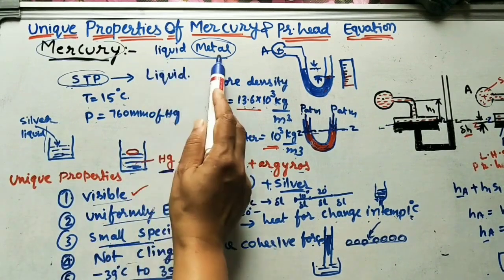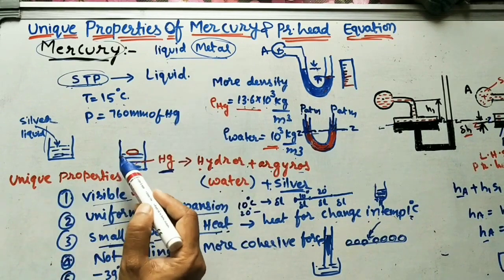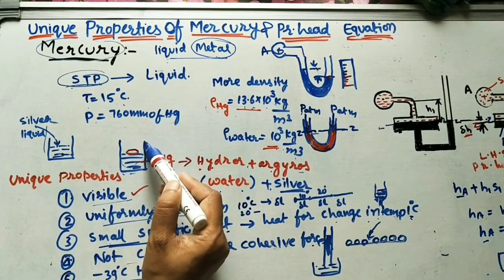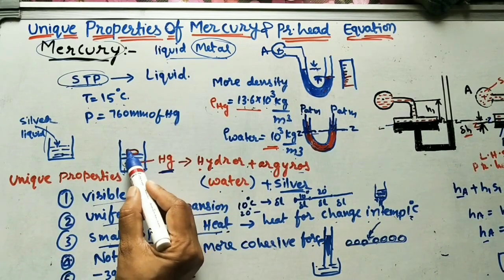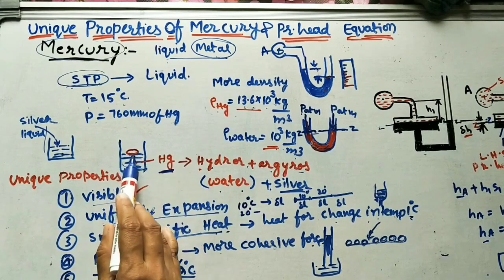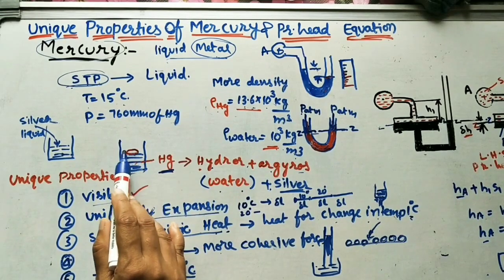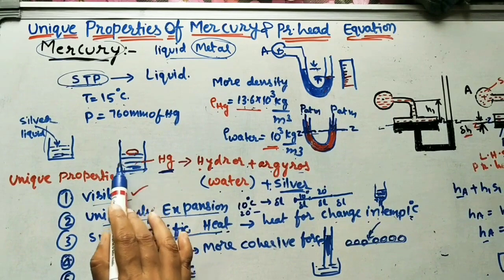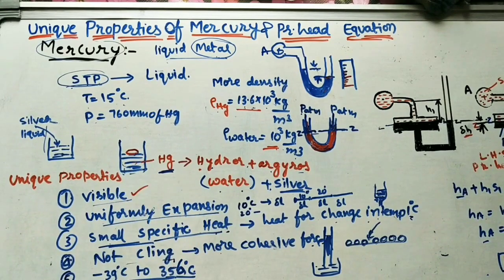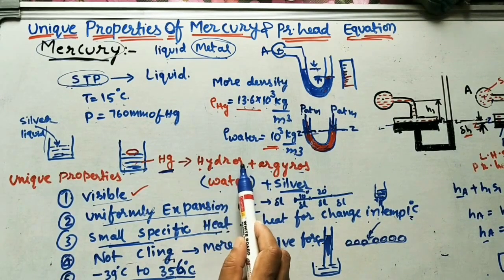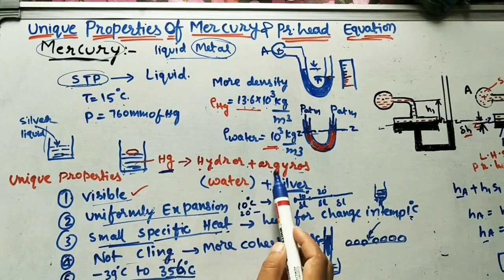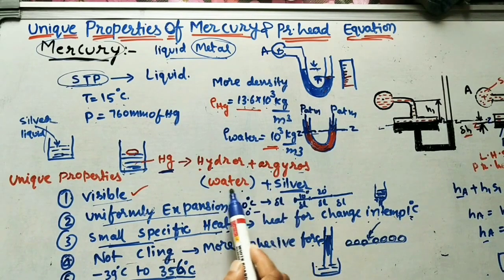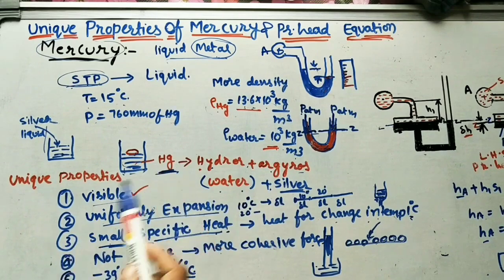Mercury is silver in color. Because it is a high-density liquid, if you place a coin in it, the coin will float. Less dense objects float, more dense objects sink. Mercury's name comes from the Greek words: 'hydro' meaning water and 'argyros' meaning silver — so it means silver-colored liquid. Its chemical symbol is Hg.